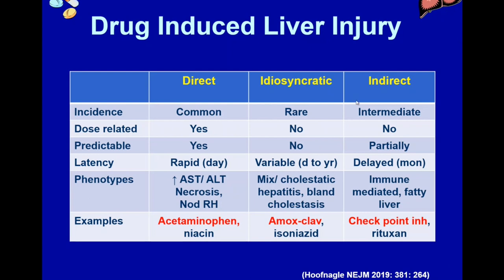There is also a third group, which is really a subgroup of idiosyncratic — indirect general mechanism of liver injury. These are relatively uncommon, not dose-related, may be partially predictable, and also have a delay in onset from starting the drug. The mechanism is felt to be the host immune system impacting either the metabolism of the liver or expression of genes in the liver. The best example of this is checkpoint inhibitors used in oncology, which can lead to immune-mediated adverse events including liver injury. Another example is rituximab, which can reactivate hepatitis B in individuals who are core positive. For purposes of today, I'm going to focus the energy on idiosyncratic DILI.